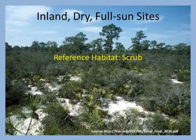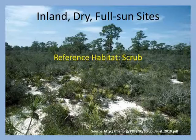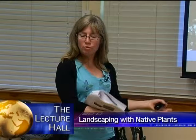Moving on to inland dry, full sun sites like scrub. This picture is a good example of why it's helpful to imagine the habitat that would exist on your site naturally. When you look at this site and see the bare ground and the dry, sandy soil, you think, is it really sustainable to work towards a lush green lawn on this property? Maybe not. So we can vary our landscaping to suit the site.